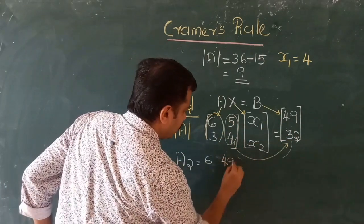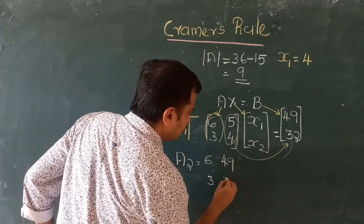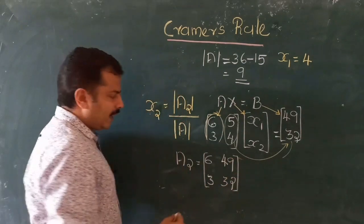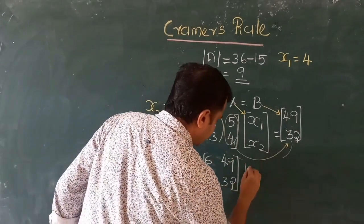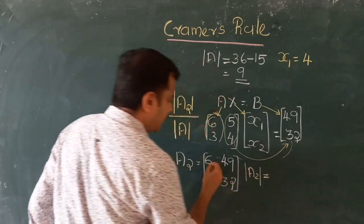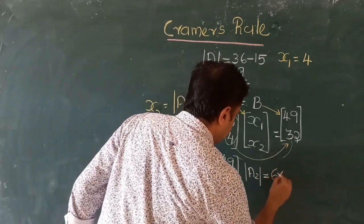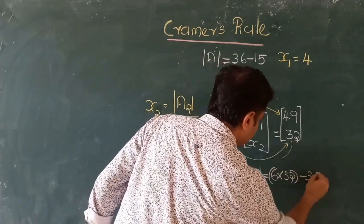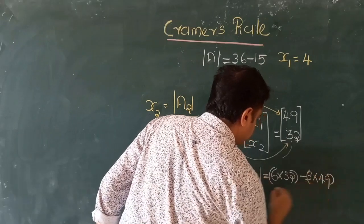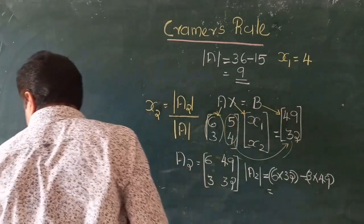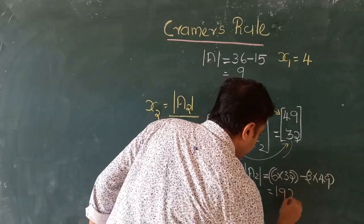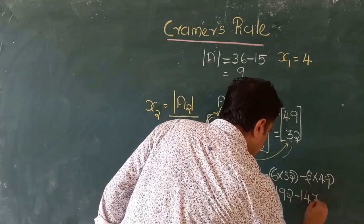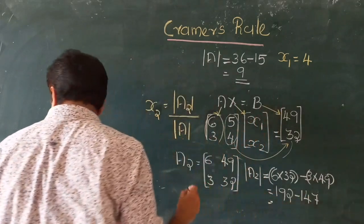The determinant of A2 is 6 times 32 minus 3 times 49, which is 192 minus 147, and the result is equal to 45.